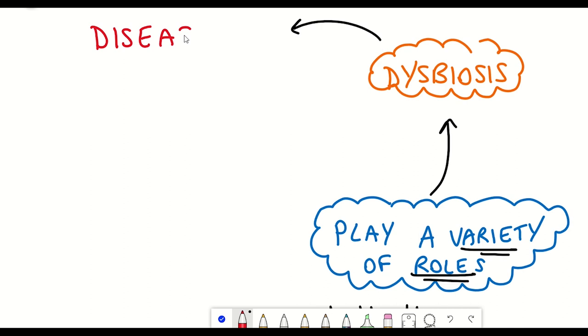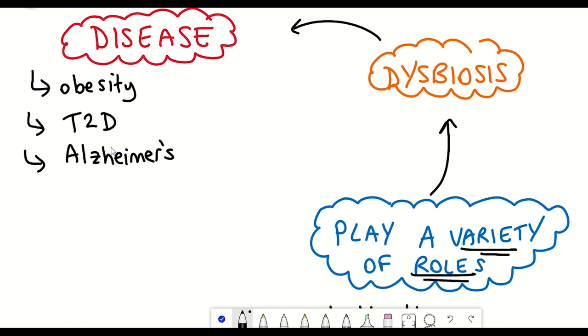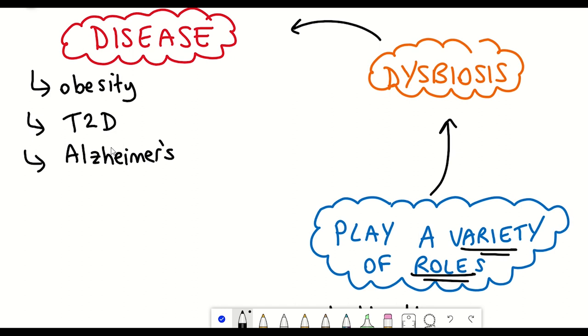And so maybe unsurprisingly, the gut microbiome and dysbiosis of the gut microbiome has been associated with a variety of diseases, such as obesity, type 2 diabetes, Alzheimer's, cancer, autoimmune diseases and depression.